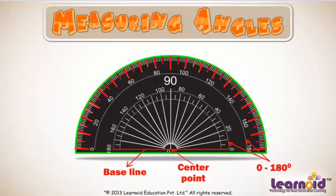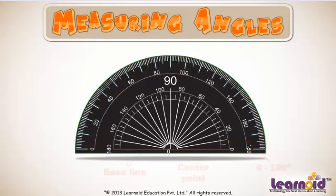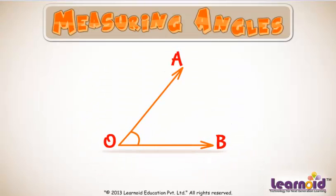After understanding the parts of a protractor, let's try to measure angles using it. To measure angle AOB,